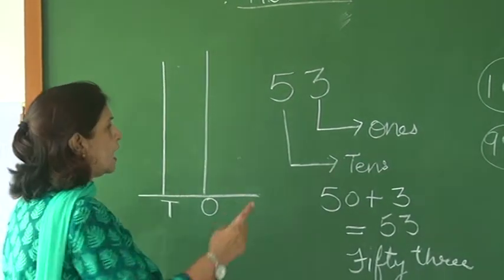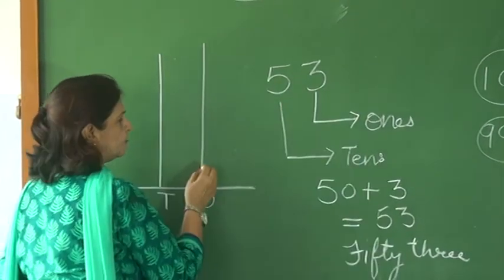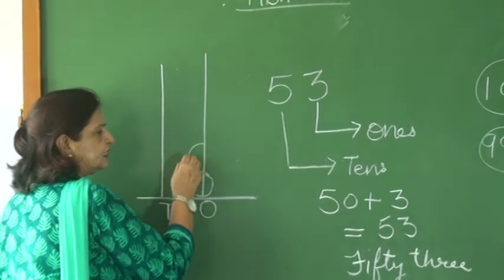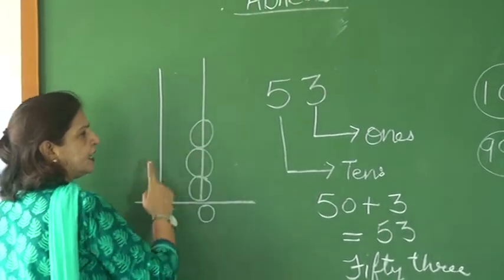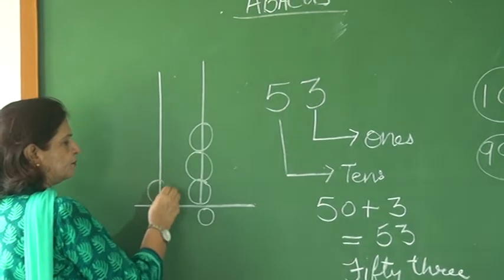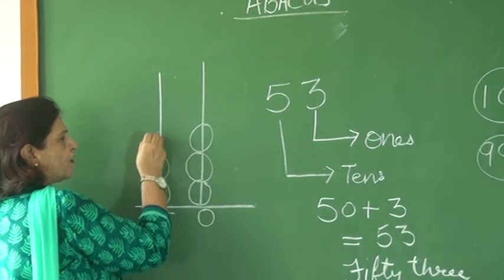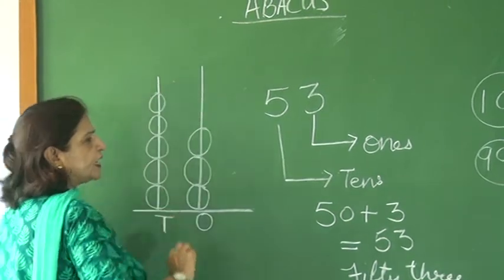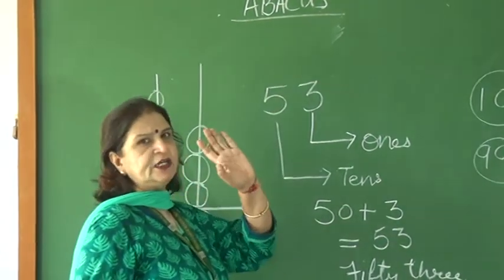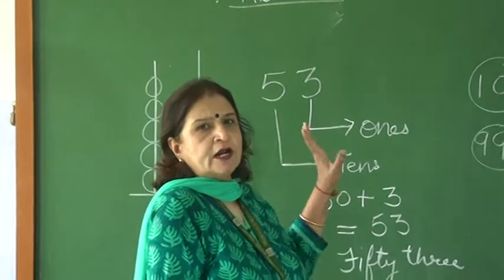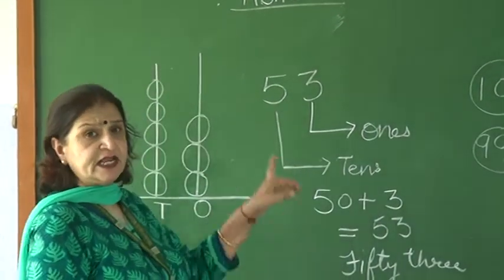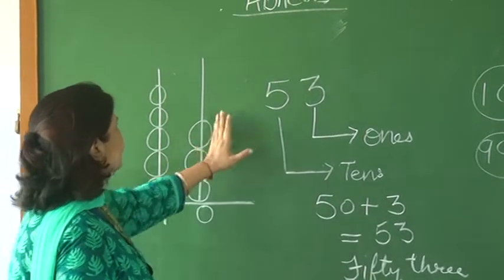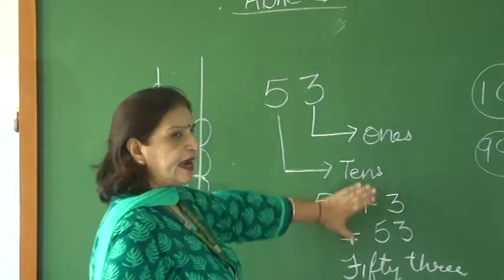Now, 53. At ones place, 3 is there, so we draw 3 beads like this way. And at tens place, 5 is there, so we draw 5. If we write 50, only 50 — you have to show the number on an abacus. So at ones place, 0 is there, then leave it — 0.